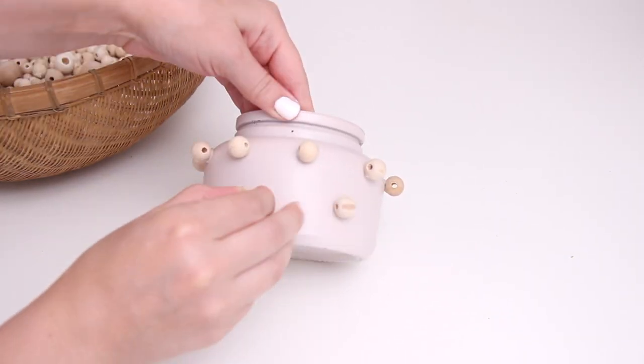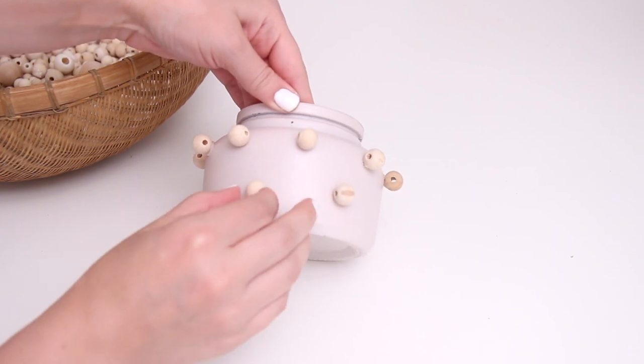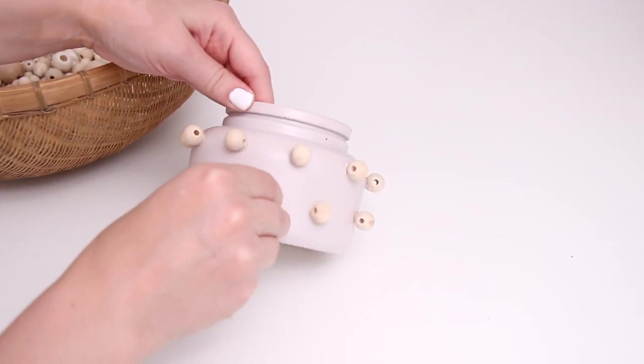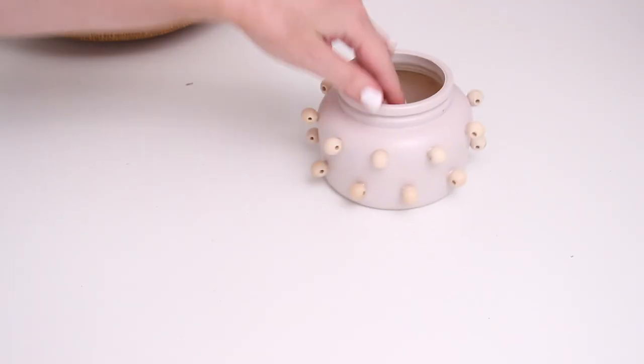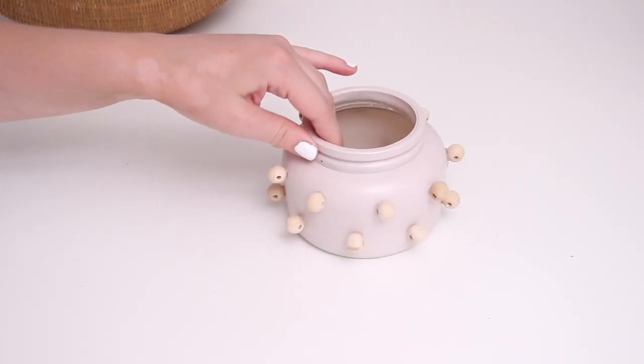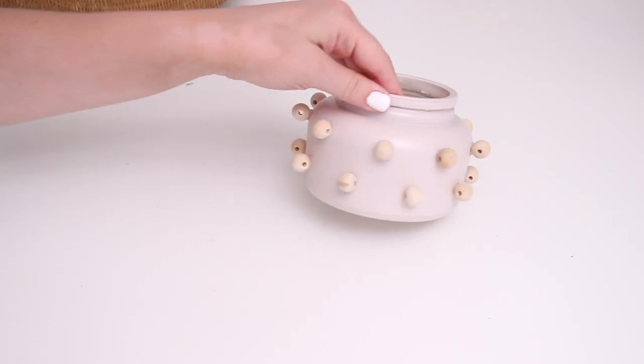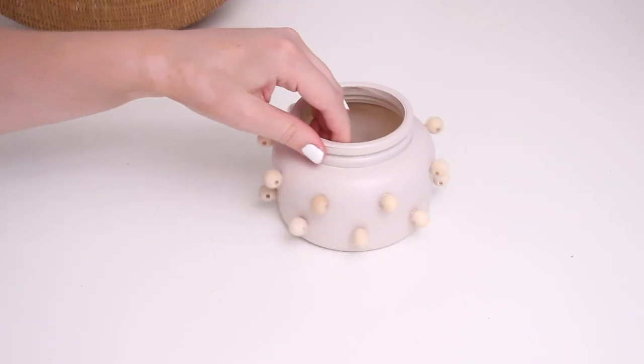So each of the beads up above, I would put a bead down below in between them. Then I did another few coats of spray paint to make the beads match. And I kind of think this looks a little alien-ish, but also pretty cool. So I actually really love how it turned out as a little planter.